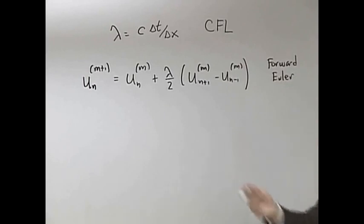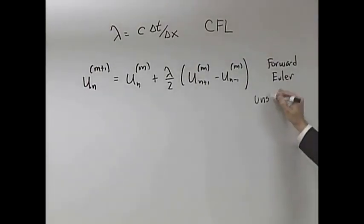Because we used an Euler scheme for our time derivative, here's the bad news: unstable for all lambda. No matter how you pick your CFL number, this thing here, as you start marching forward, will blow up.